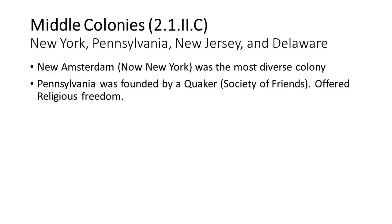The middle colonies — New York, Pennsylvania, New Jersey, and Delaware — were really the most diverse place in America. New York used to be called New Amsterdam, settled by the Dutch, until the Duke of York took it over. Pennsylvania was founded by William Penn, a Quaker, also known as the Society of Friends — Richard Nixon was also a Quaker. They offered religious freedom, and in the 1770s the Quakers would form the first anti-slavery society in America.